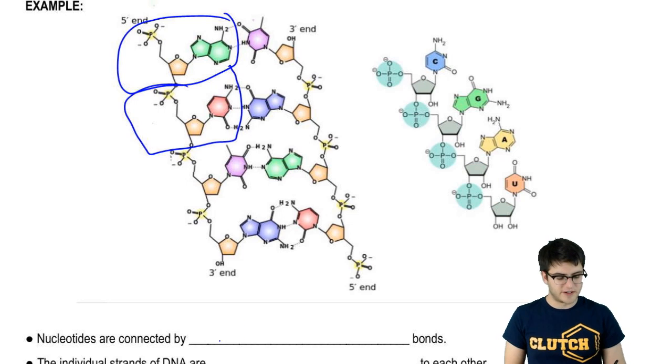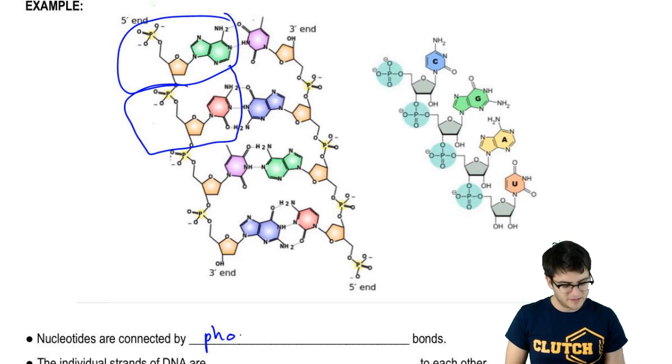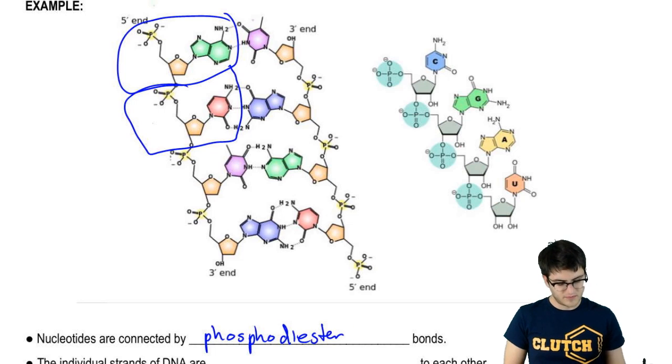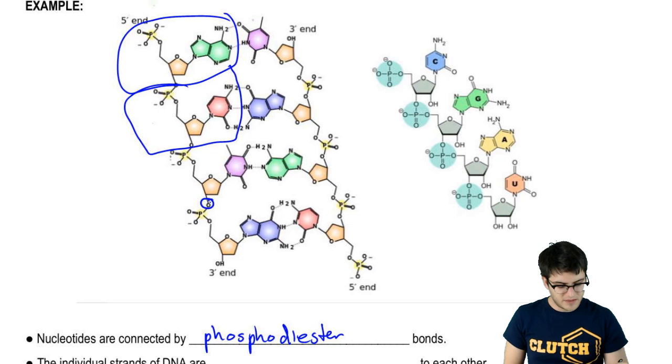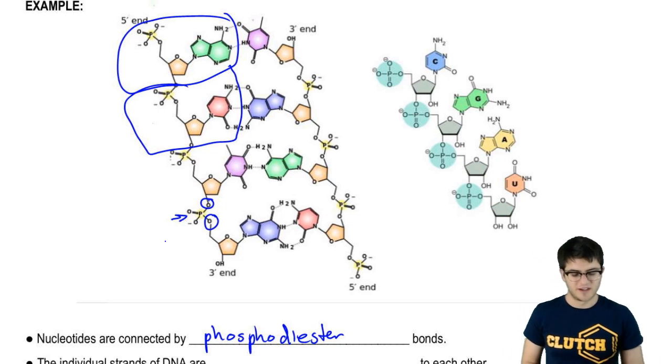Now, these nucleotides are connected by a special bond called a phosphodiester bond. This might seem like a complicated name, but it actually just means something very simple. These two chemical groups here are esters, this is a phosphate. One phosphate, two esters, phosphodiester bond.